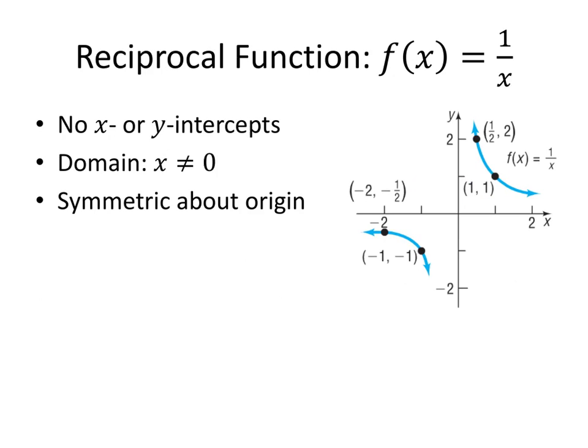Next up we have the reciprocal function, f of x equals 1 over x. This graph doesn't have any x-intercepts or y-intercepts — the graph never crosses either axis. The domain is all real numbers except 0; we can take the reciprocal of anything other than 0. This graph is also symmetric about the origin.